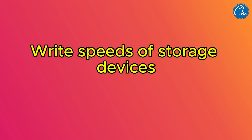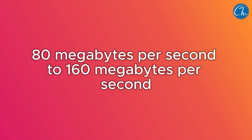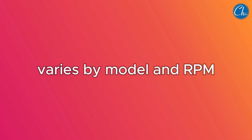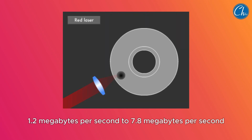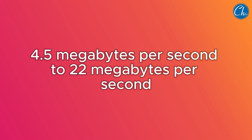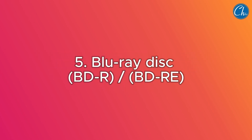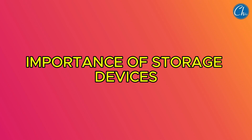Write speeds of storage devices: (1) Diskette/floppy disk: 30 KB/s to 60 KB/s. (2) Hard disk drive (HDD): 80 MB/s to 160 MB/s, varies by model and RPM. (3) Compact disk CD-R/CD-RW: 1.2 MB/s to 7.8 MB/s. (4) Digital versatile disk DVD-R/DVD-RW: 4.5 MB/s to 22 MB/s. (5) Blu-ray disk BD-R/BD-RE: 9 MB/s to 36 MB/s.